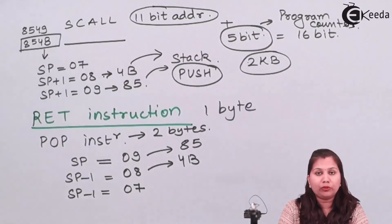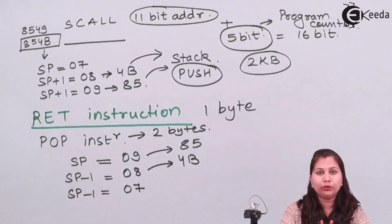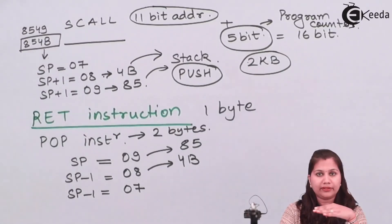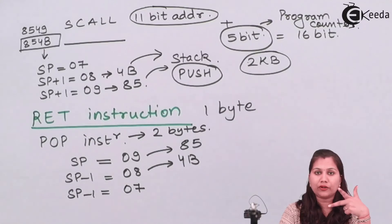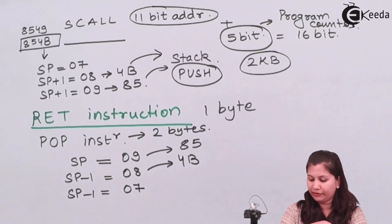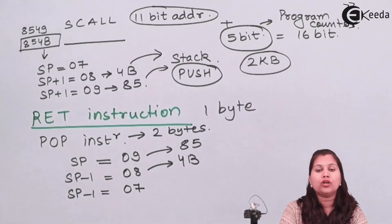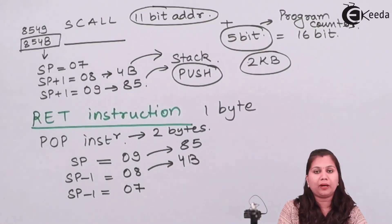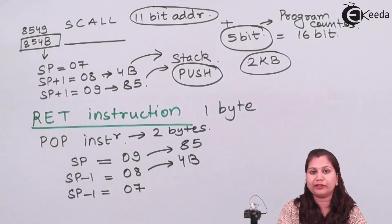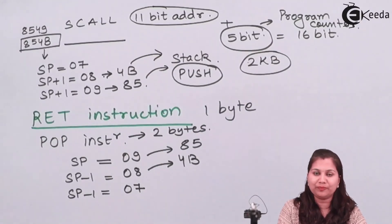In subroutine instructions we studied two instructions: the call and the return instruction. The call instruction is of two types — absolute call (ACALL) and long call (LCALL). The return instruction is a 1-byte instruction. This completes our study of subroutine instructions in the 8051 microcontroller.